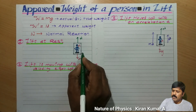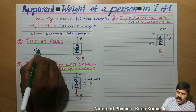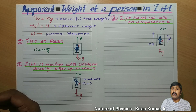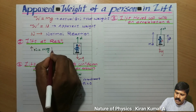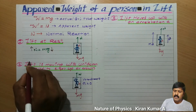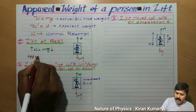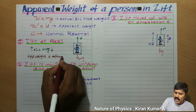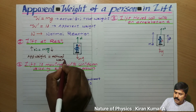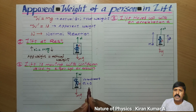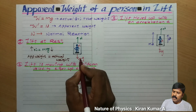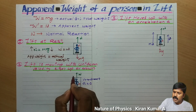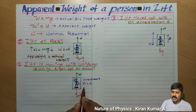First case: lift at rest. Whenever the lift is at rest, the normal reaction is acting in the upward direction and the weight of the body is acting in the downward direction. Both are equal in magnitude and opposite in direction. In this situation, apparent weight is equal to actual weight. There is no change because the lift is at rest. So W dash is equal to W.